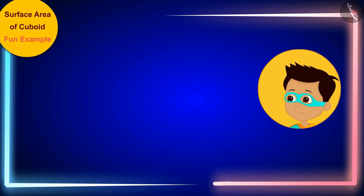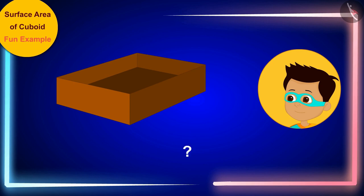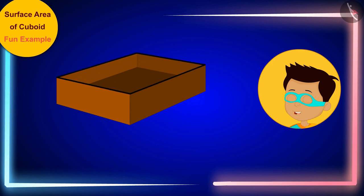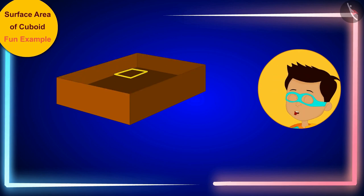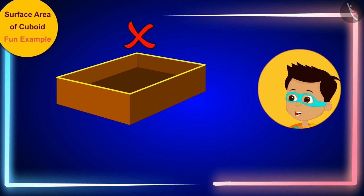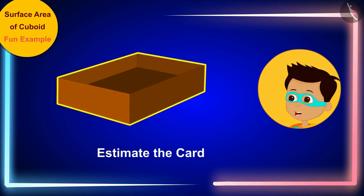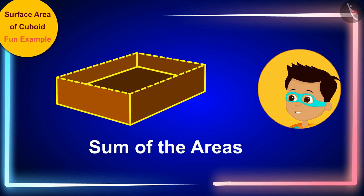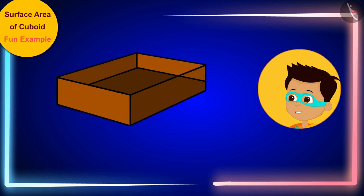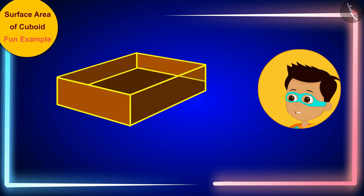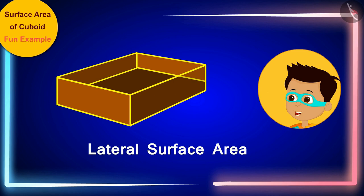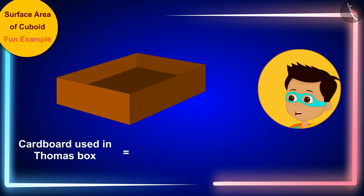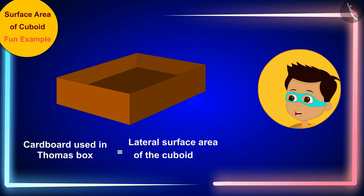Manas finds that 2890 square centimeters of cardboard has been used in his box. Now Thomas explains his box: it opens from the top, so the top surface is not present. To estimate the cardboard used, he needs to add the areas of the remaining surfaces — the vertical surfaces — which give the lateral surface area of the cuboid.